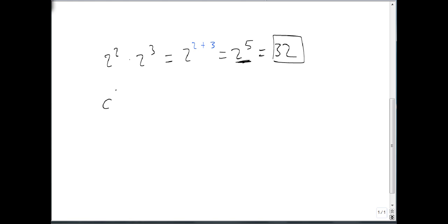If we have variables, c to the third times c to the seventh becomes c to the three plus seven, which is c to the tenth, and our answer is just c to the tenth.